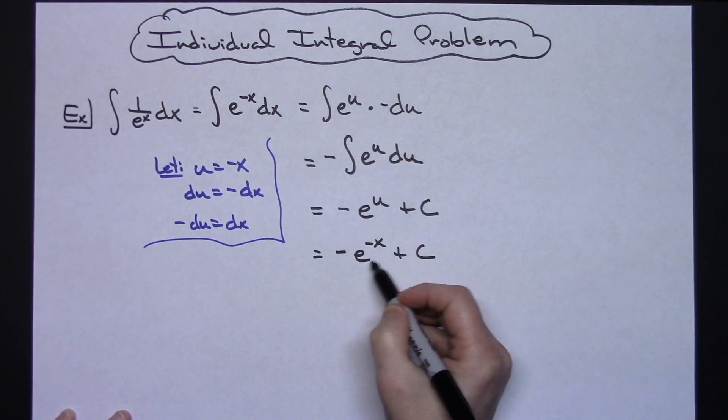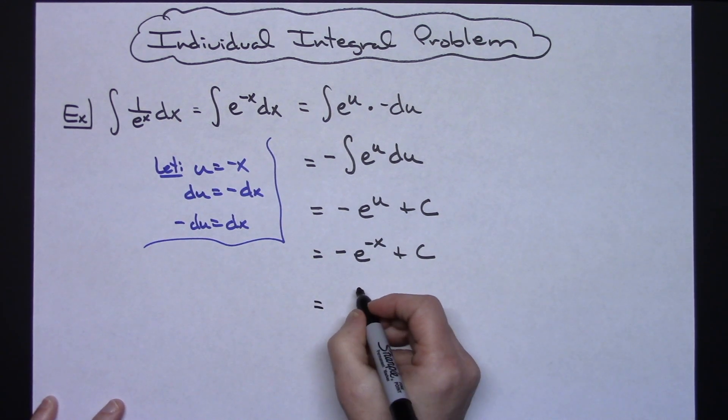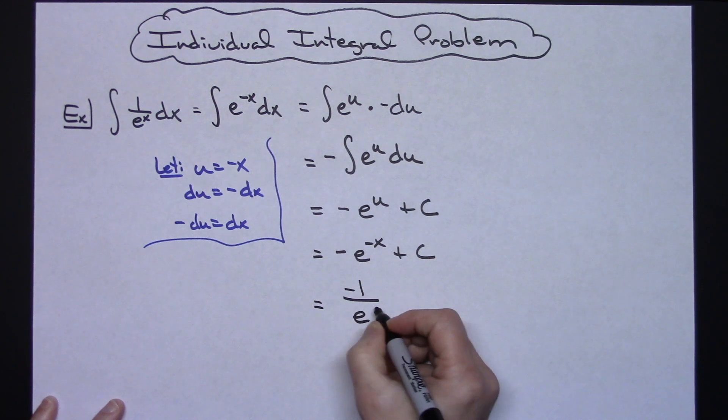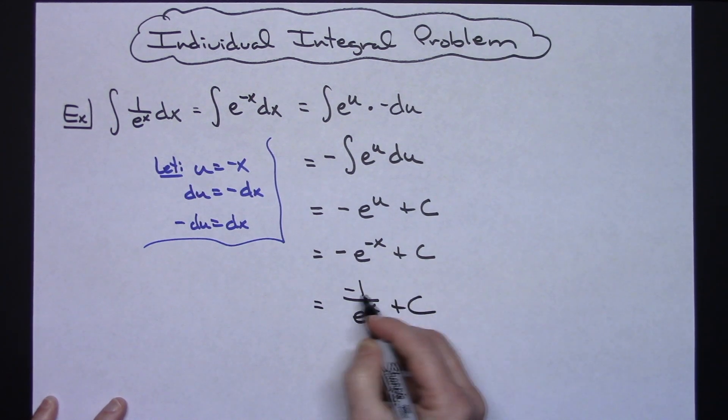And then some people might want to get rid of that negative exponent there, so moving that down to the bottom and making it positive that'll give me negative 1 over e to the x plus c.